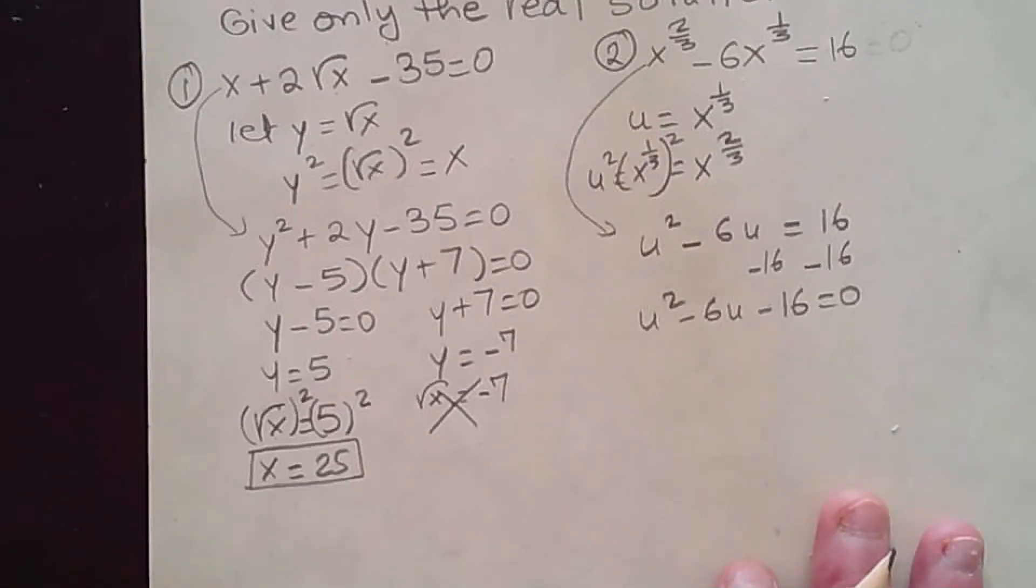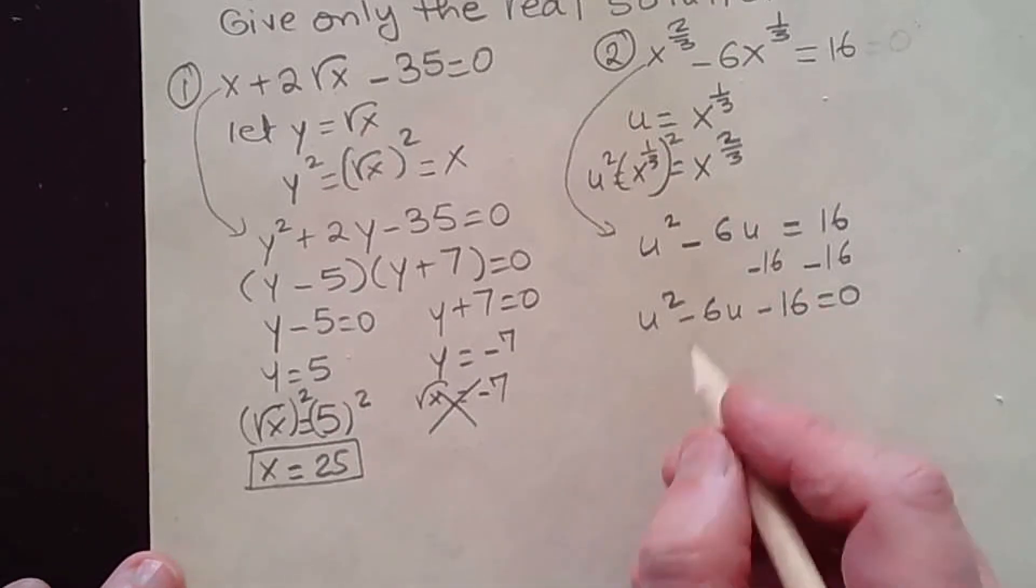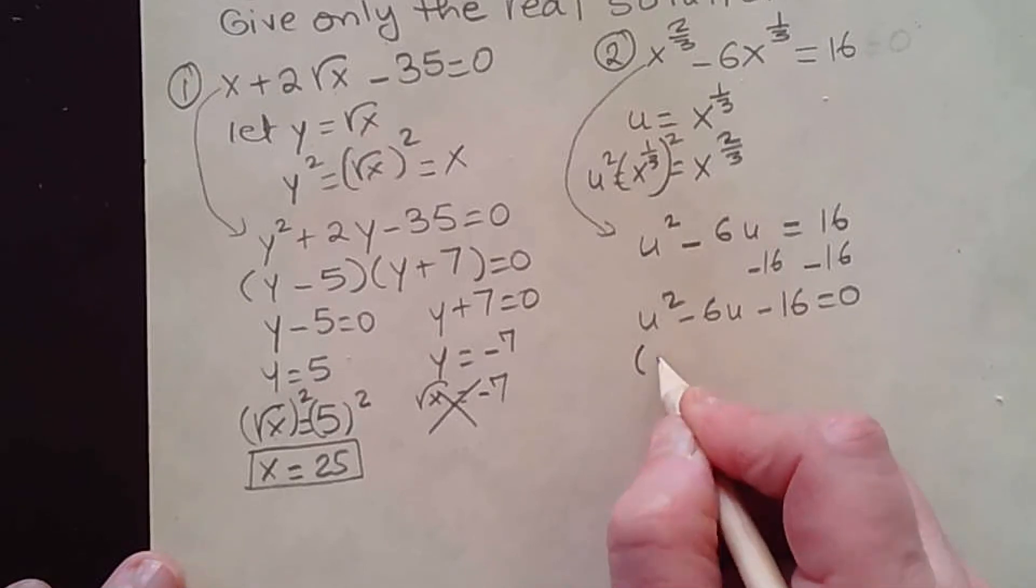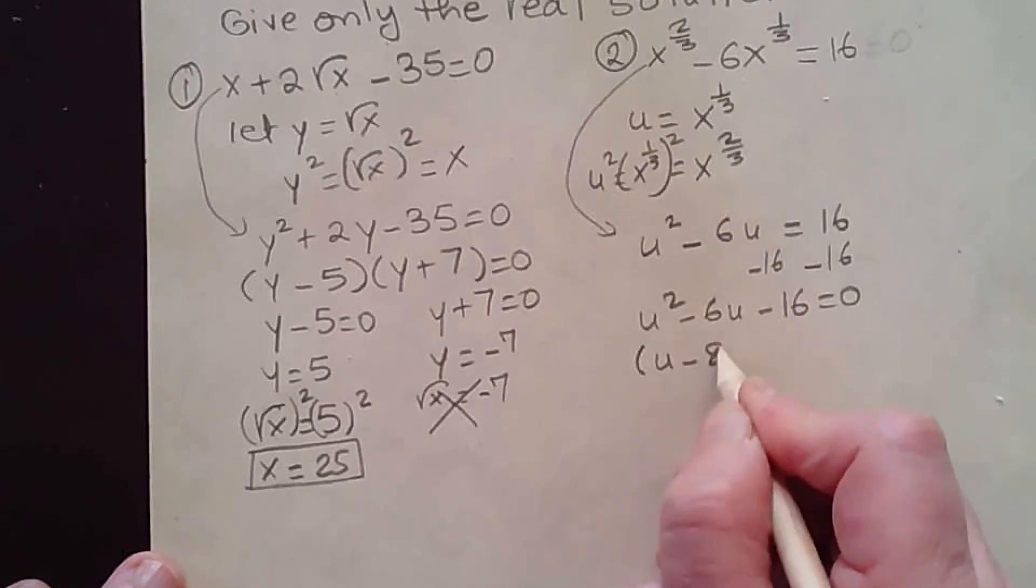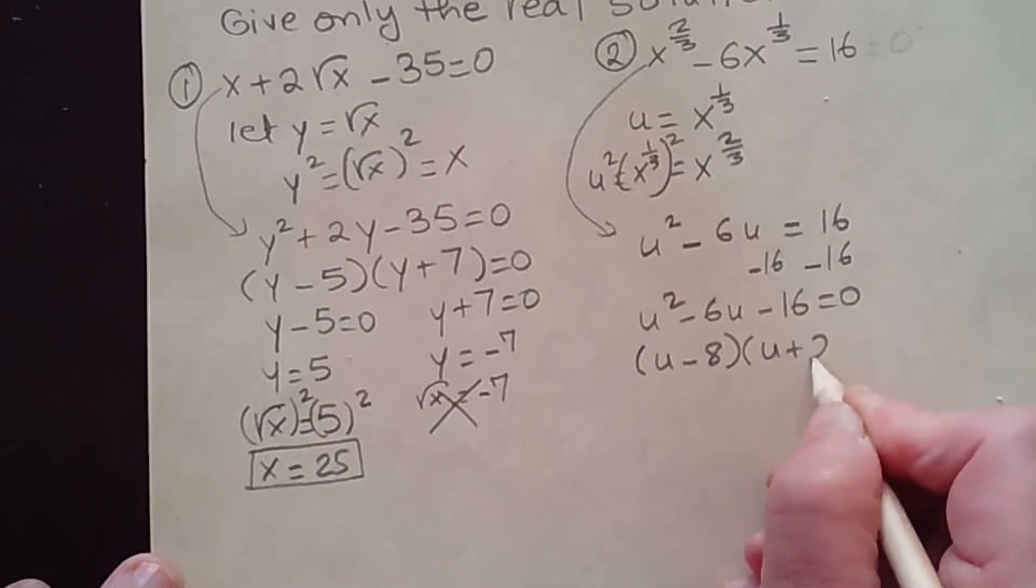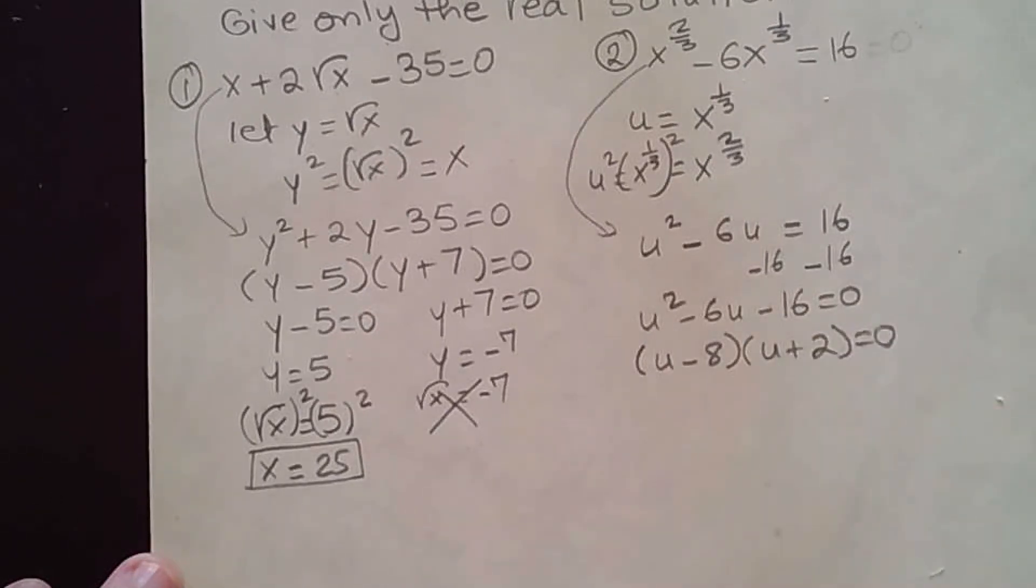This is also easily factorable. Remember, 16 is 8 times 2, and negative 8 plus 2 is negative 6. So this becomes u minus 8 times u plus 2 equal to 0. Again, negative 8u plus 2u is negative 6u. Negative 8 times 2 is negative 16.